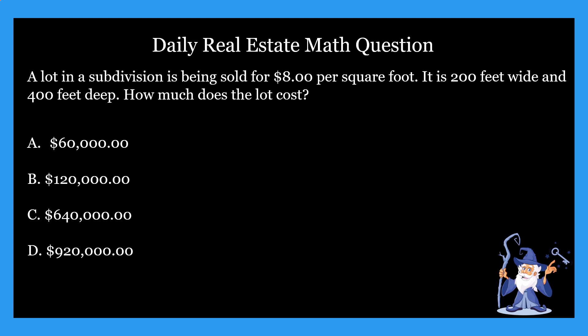So the question says: a lot in a subdivision is being sold for $8 per square foot. It is 200 feet wide and 400 feet deep. How much does the lot cost? It gives us four options: A, $60,000; B, $120,000; C, $640,000; or D, $920,000.